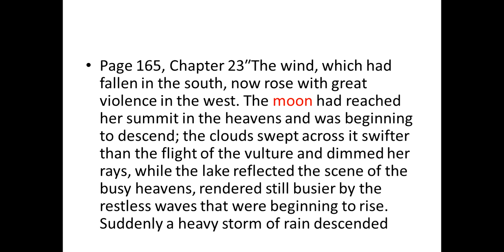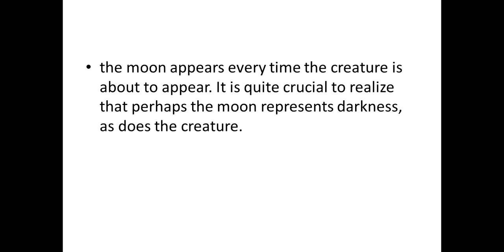"The wind, which had fallen in the south, now rose with great violence in the west. The moon had reached her summit in the heavens and was beginning to descend." Here, the moon is used as foreshadowing for the appearance of the creature. Every time the moon appears, the creature is about to appear. It's quite crucial to realize that perhaps the moon represents darkness, as does the creature.